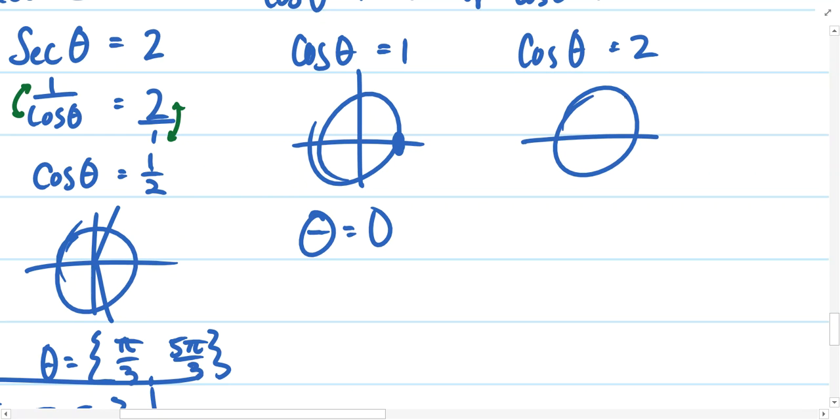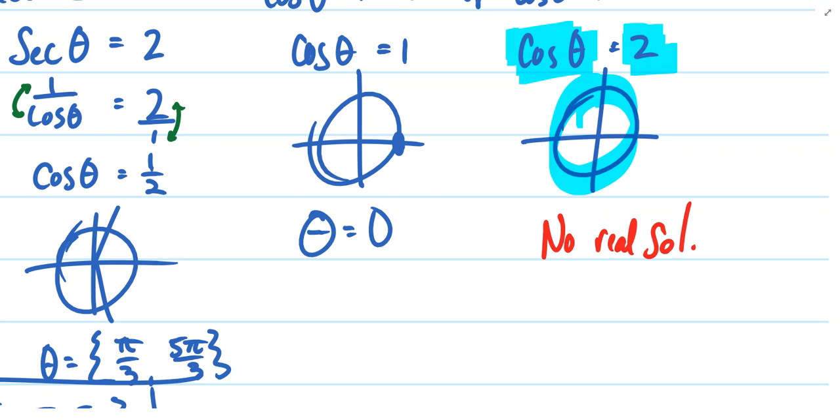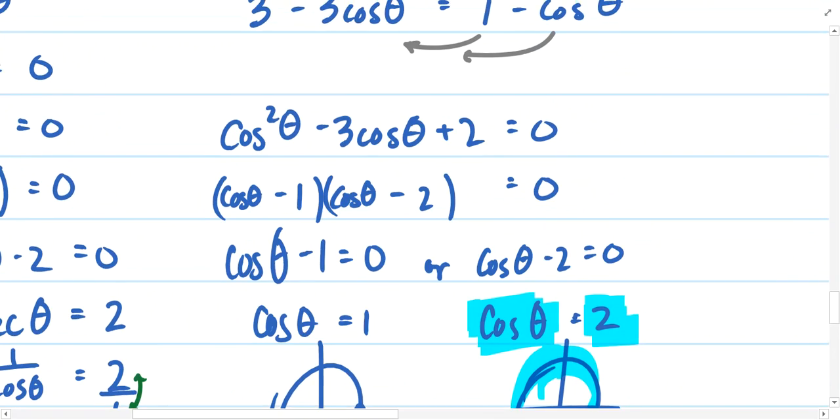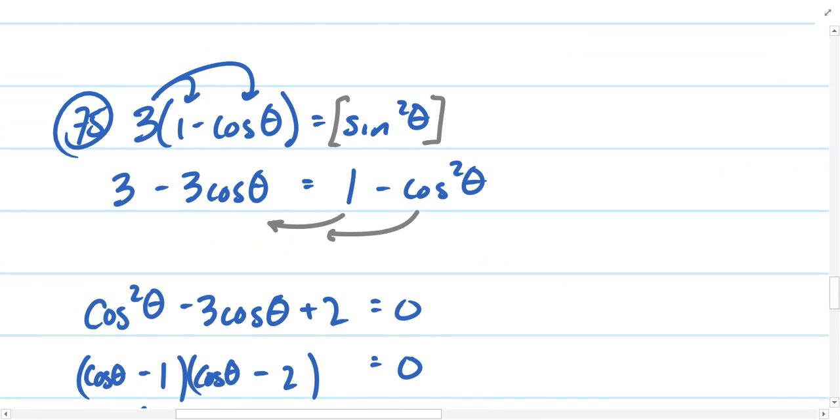And hopefully you recognize that that's not possible. There are no real solutions here. There's nowhere in this unit circle that contains an x value equal to 2. So because of that, this particular factor yields no real solutions. And so we'll stop there and say that theta must only be, in this case, equal to 0. And we can take a look at a graph and confirm that.